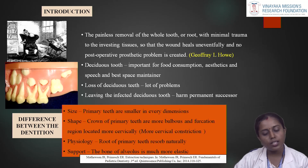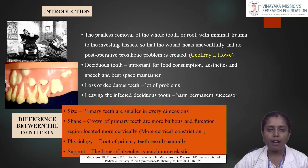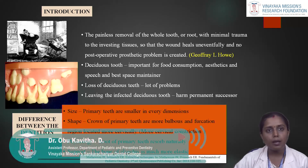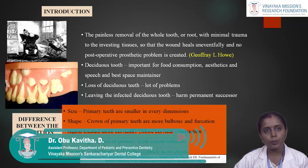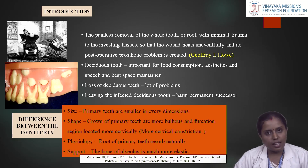Regarding the physiology, the roots of primary teeth resorb naturally — for example, the mesial root is more resorbed compared to the distal root, which is not seen in permanent teeth. We must take a preoperative x-ray before extraction to verify that all roots have been completely removed. The alveolar bone is much more elastic in primary teeth compared to permanent teeth, so more pressure is required. These are the basic differences between primary and permanent teeth to evaluate before the extraction procedure.